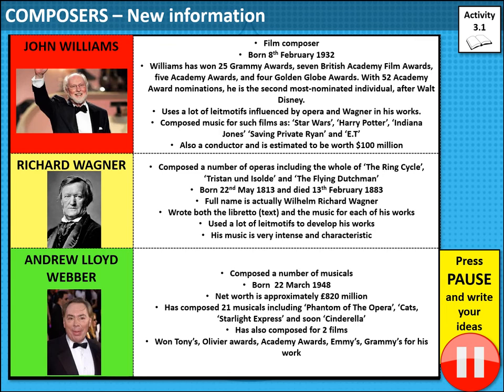Carrying on with step one in your booklet, I thought it would be interesting to go through some composers and a little bit about each of them — one from film, one from opera, and one from a musical. John Williams was born on 8th February 1932. He's won a number of awards — all listed there. He was influenced quite heavily by opera and Wagner, who we'll look at in a second, in his works.